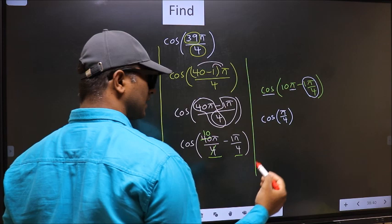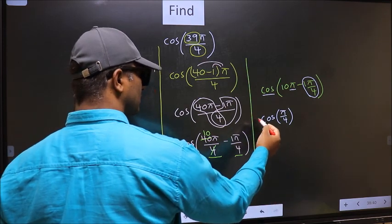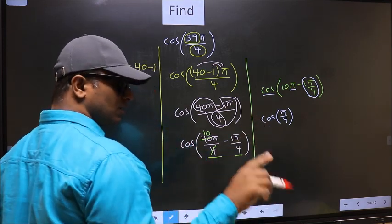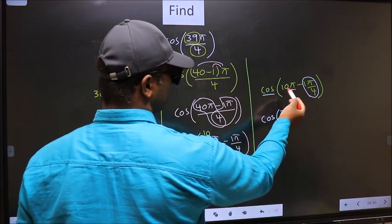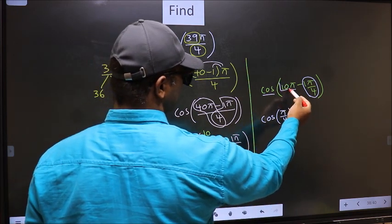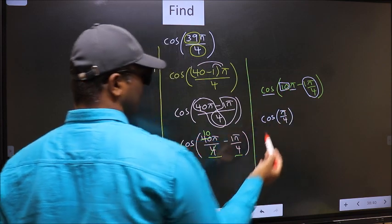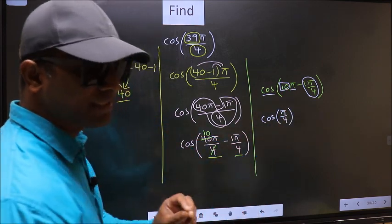Now the question arises, will we get plus or minus here? To answer that, we should look at the number before pi, which is 10. And 10 is even.